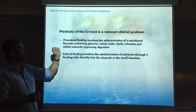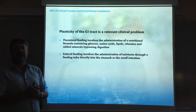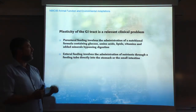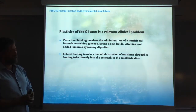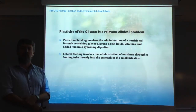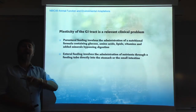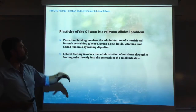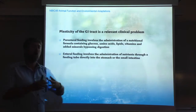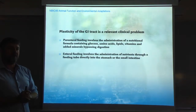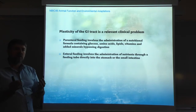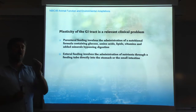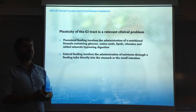A clinical problem related, for example, with parenteral feeding. Parenteral feeding is associated with administration of nutrients via the circulation through a vein, therefore bypassing the gastrointestinal system. In parenteral feeding, a solution containing glucose, amino acids, lipids, vitamins, and all the essential nutrients are provided. So the patient can continue metabolizing and will get the appropriate nutrients, but we are bypassing the gastrointestinal tract.